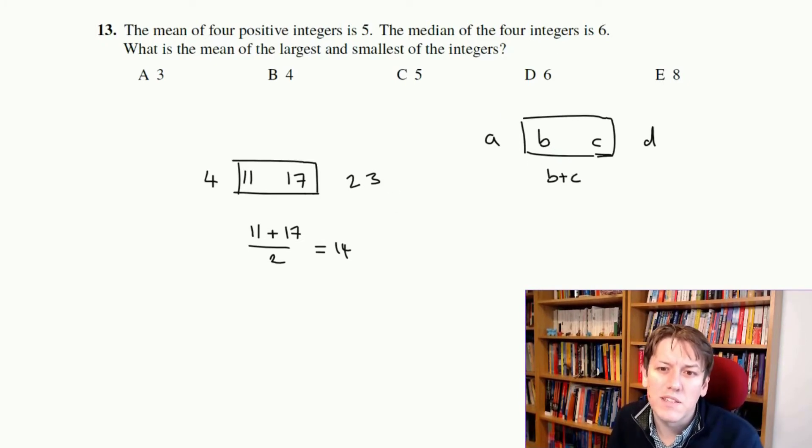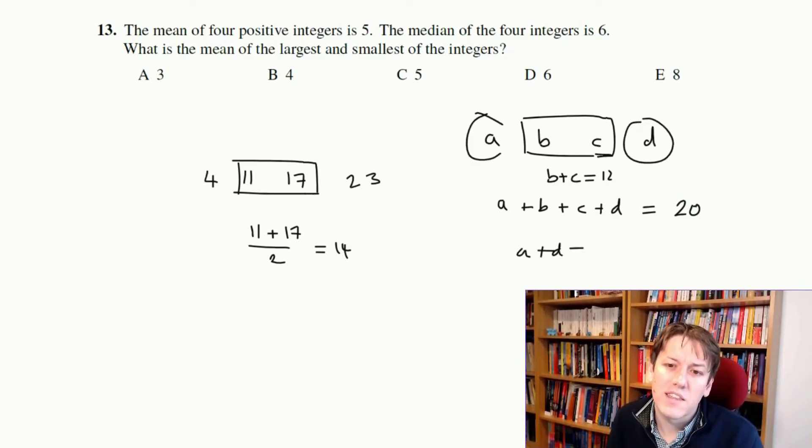So we've got B plus C is 12, but the mean of all of the integers is 5, so that would mean that A plus B plus C plus D must be 20 because that's 4 times 5. If the mean is 5, the total is 4 times 5. So that must mean that the other 2, A and D, must add together to give 8 because the middle 2 add together to give 12, and in total you've got 20. So if they add together to give 8, their mean is 8 divided by 2, which is 4, and so the answer is B, 4.